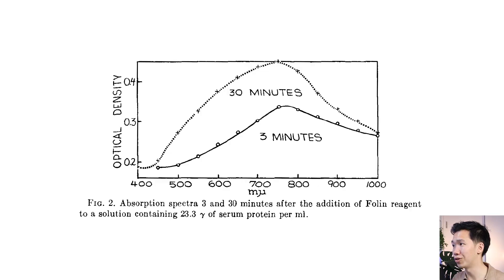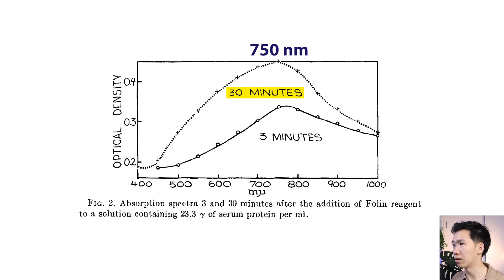On page 271 of the paper, you can find a hand-drawn chart that shows 755 nanometers is the peak wavelength of the optical density. 30 minutes of incubation time can produce a higher optical density than that of 3 minutes. So the standard protocol asks you to wait 30 minutes before you measure the optical densities in a spectrophotometer. This figure is clearly hand-drawn, and it's quite funny to see that back in the day scientists needed to draw these figures with pens on paper. Thank God we have Excel now.